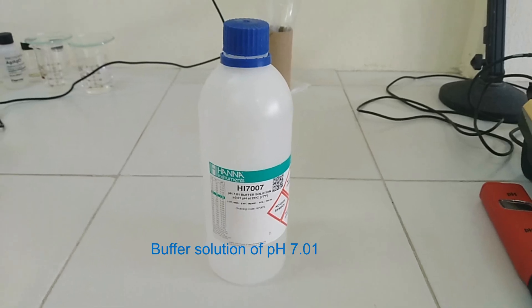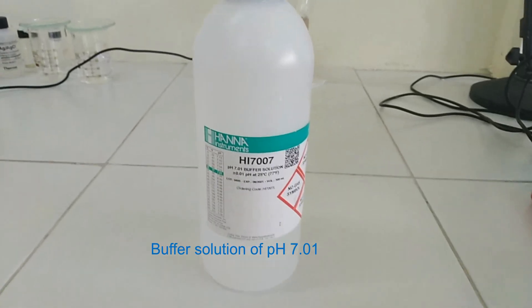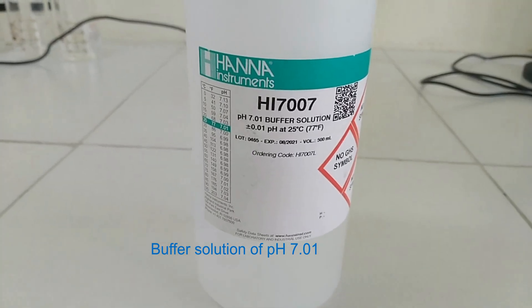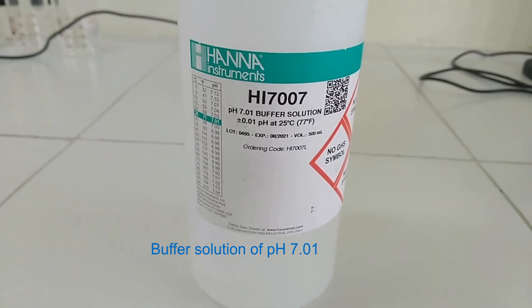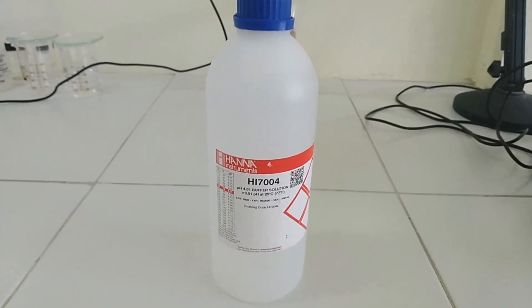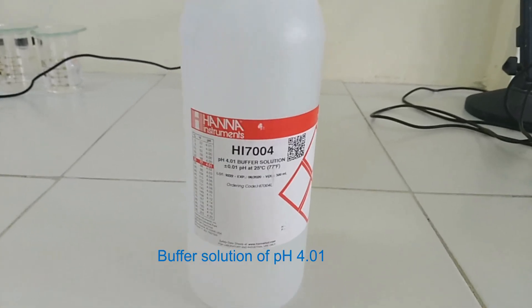Buffer solution of pH 7.01 and 4.01 is sufficient for two-point calibration of any type of pH meter or general buffer. Always start calibration with buffer solution of pH 7.01 first and then with 4.01.